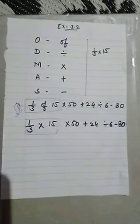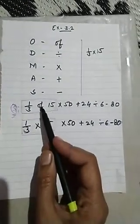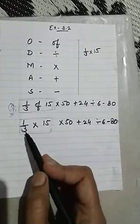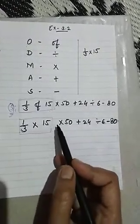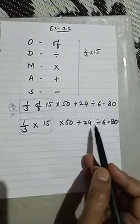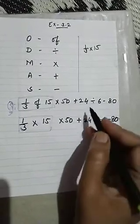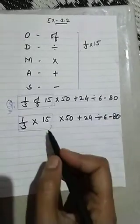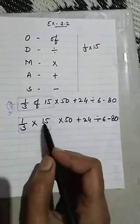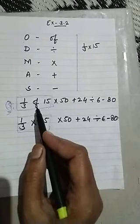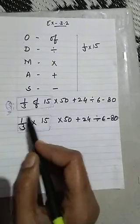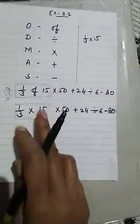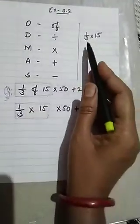First we will solve 'of'. Of means multiply, so here we have converted 'of' into multiply: 1/3 × 15 × 50 + 24 ÷ 6 − 80. Now we have two multiplications, but these two numbers have 'of' between them, so first we will solve those two.